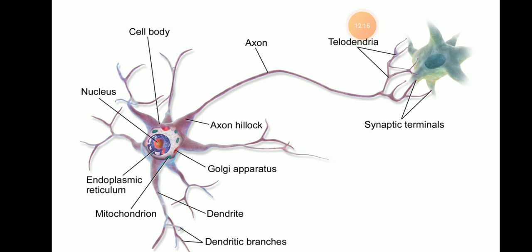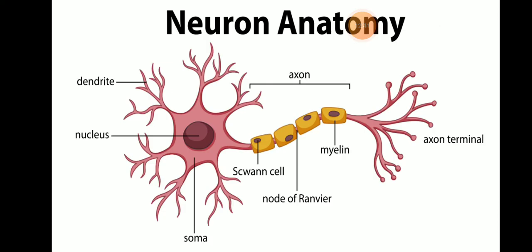The cell body gives out two types of processes: the dendron and the axon. Dendrons are short but branched. The fine branches of the dendrons are known as dendrites. Dendrites carry impulses towards the dendron, and the dendron carries impulses towards the cytone.